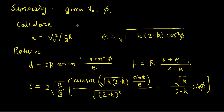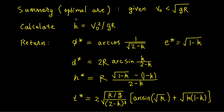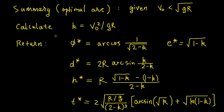All flight characteristics have now been solved and the results are summarized. Given v0 and φ, we first calculate the dimensionless quantities k and e. We can then calculate the firing range, the height of the apogee, and the flight time. There is also a summary for the optimal arc — that is, the arc with maximum range for a given v0. Thank you very much for watching, and I'll see you next time.